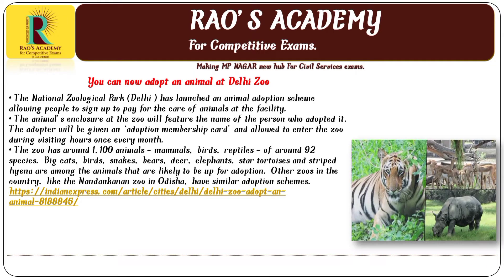Moving on to the next news: National Zoological Park Delhi has launched an animal adoption scheme, allowing people to sign up and pay for the care of an animal at the facility. The enclosures at the zoo will feature the name of the person who adopted the animal. The adopter will be given an adoption membership card and allowed to enter the zoo during visiting hours once every month. The zoo has around 1,100 animals — mammals, birds, and reptiles of around 92 species.